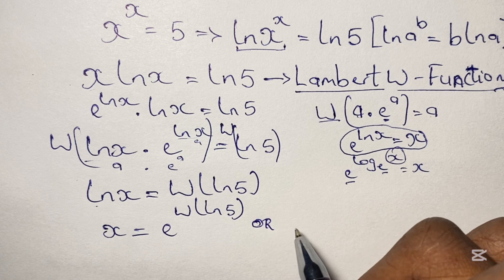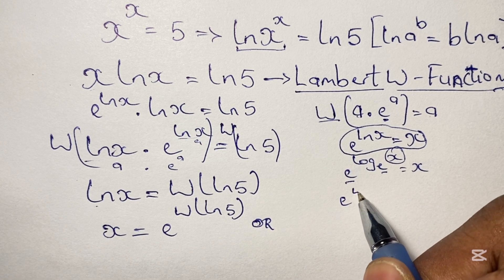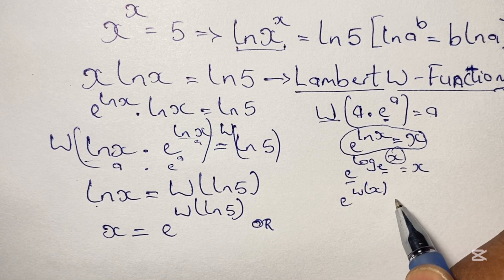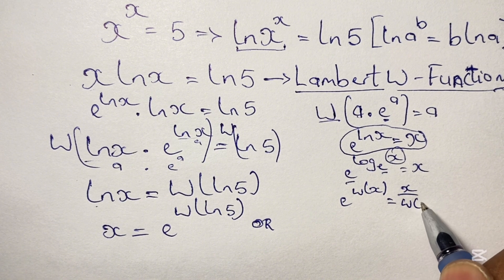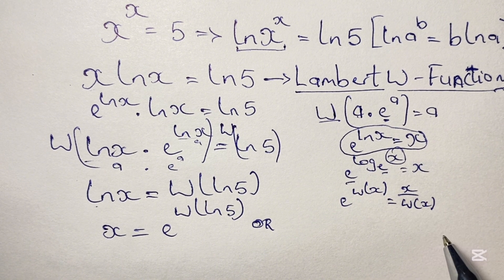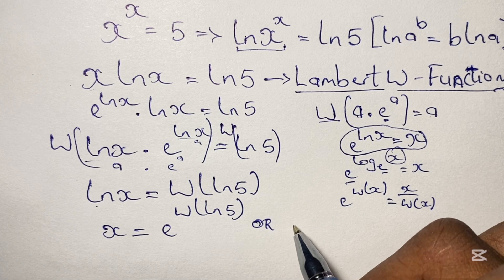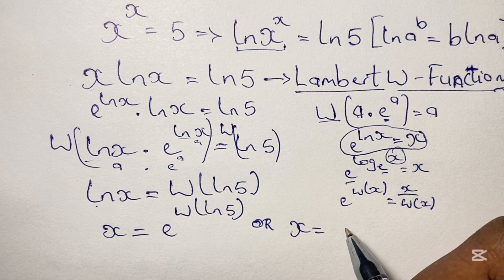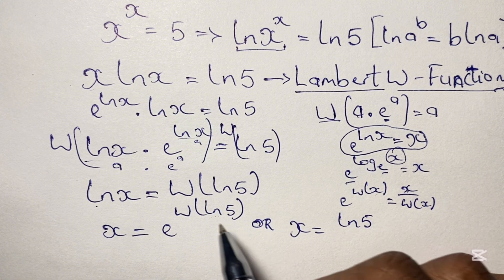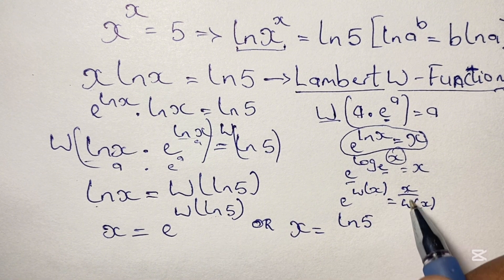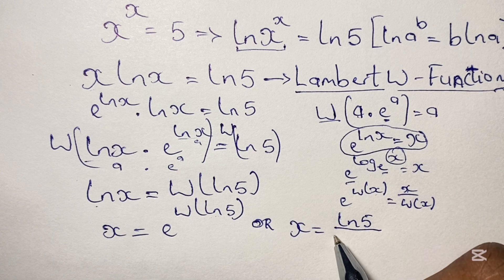We can also write the solution in an alternative form: e to the power of W of x equals x over W of x. Applying this here, since x in the bracket is ln 5, we have x equals ln 5 over W of ln 5.